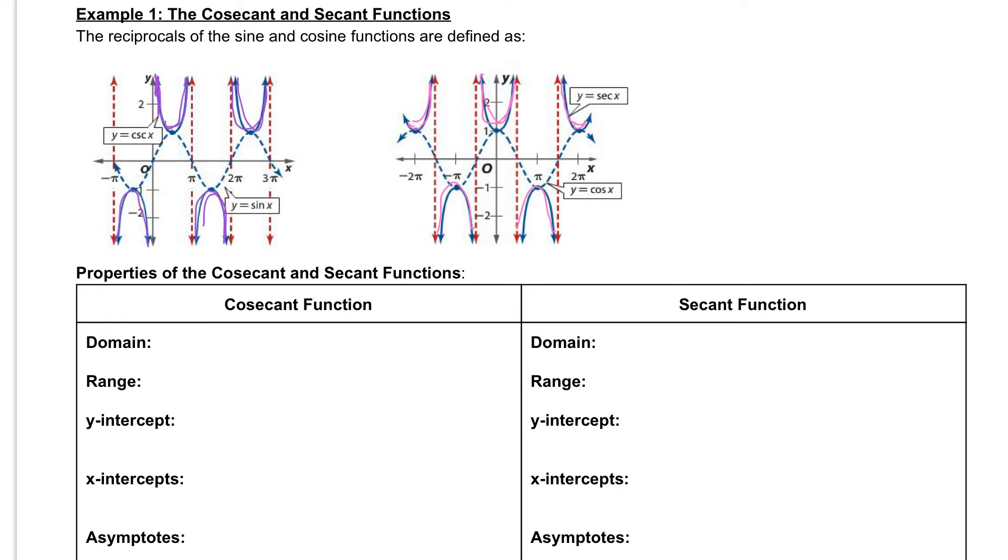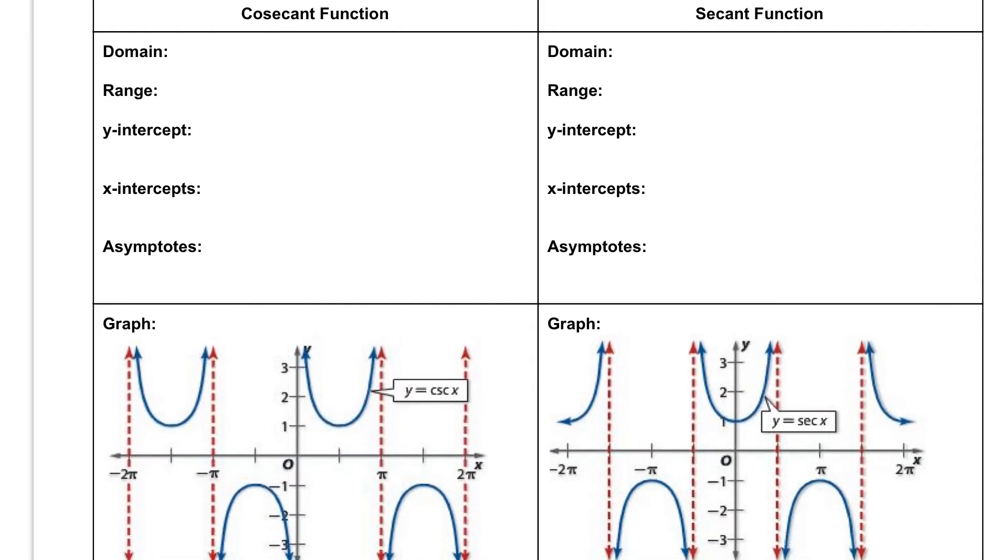So let's take a look at some properties of our cosecant and secant functions below. I have the graphs for you here. This is the cosecant function, here's your secant function. They look very similar just like the sine and cosine look very similar, but they start and have asymptotes in different spots.